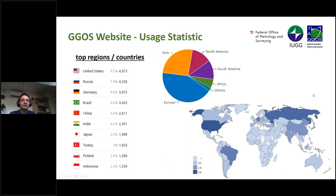Looking at the user statistic by location, the majority of people visiting the GIGOS website come from Europe, then from Asia, North America, and South America — so from all over the world. You can also see the top 10 regions or countries on the left side.